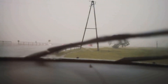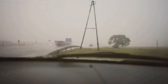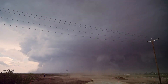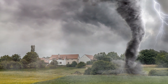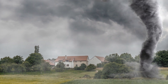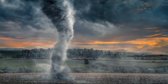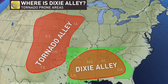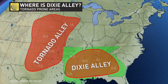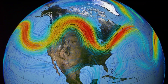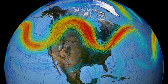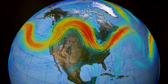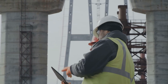Tornado Alley is not static — climate change and shifting weather patterns are moving it. States like Tennessee, Mississippi, and Alabama are seeing more tornadoes, an area sometimes called Dixie Alley. Warmer temperatures mean more energy for storms, and the shifting jet stream alters storm paths, causing tornadoes to appear in new places.